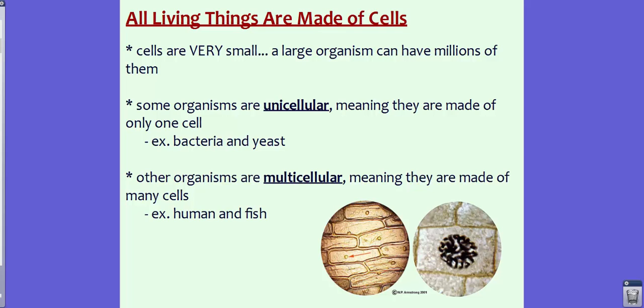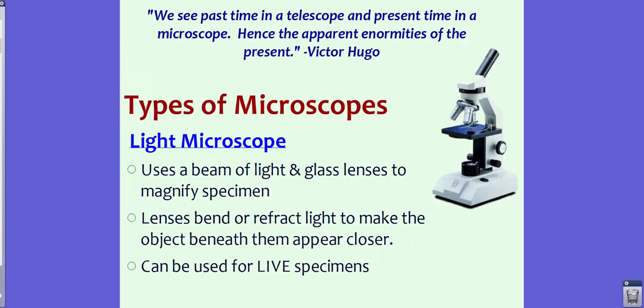We also have organisms that are multicellular, meaning that these organisms are made up of many cells. Examples of these would be humans or fish or birds or plants. There's plenty of organisms out there that are multicellular. You probably are more familiar with these types of animals or organisms than you are with unicellular organisms.